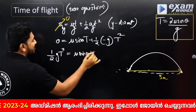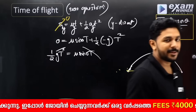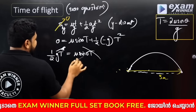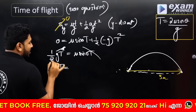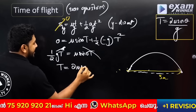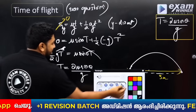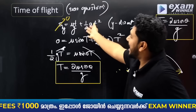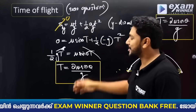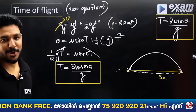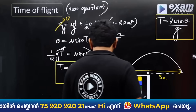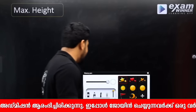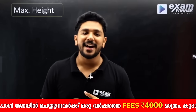So sy equals u sinθ·T minus half gT squared. Setting sy equal to zero: 0 = u sinθ·T minus half gT². Therefore, half gT = u sinθ, which means T = 2u sinθ by g. Now it's time of flight done.